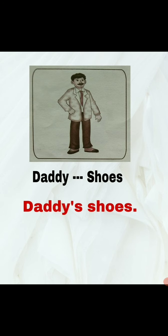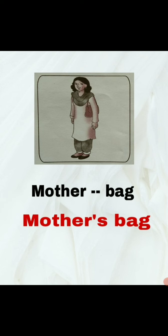Now let us see the second example: mother bag. In the picture you can see the mother carrying a bag. There are two words: mother and bag. How can you change it so that this bag belongs to mother? You will write mother's bag — add apostrophe S at the end of the spelling of mother. Mother's bag — so when you read it, this bag belongs to mother.